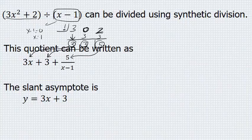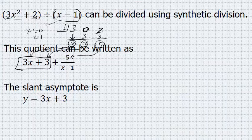The slant asymptote, the equation of the slant asymptote can be found here. y equals 3x plus 3 is the equation of the slant asymptote.